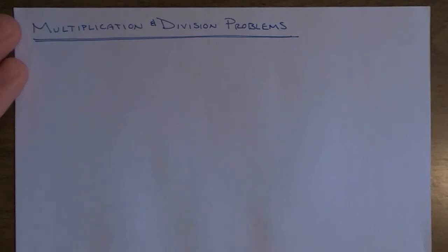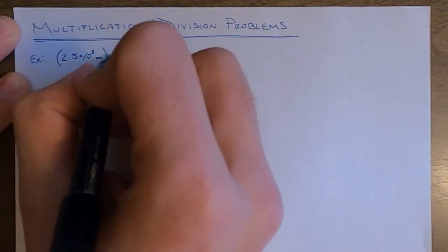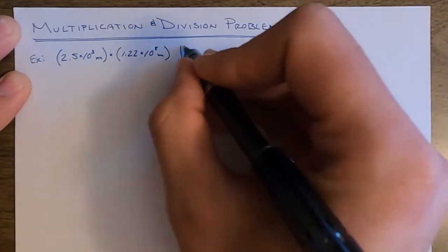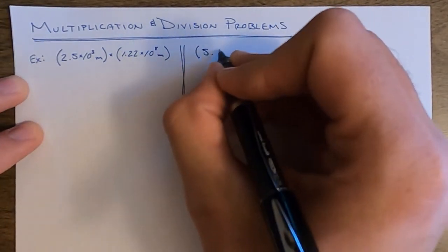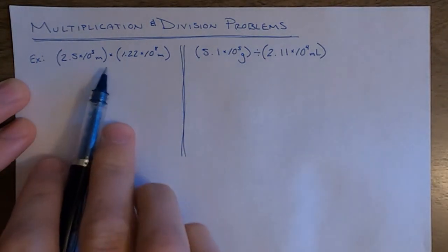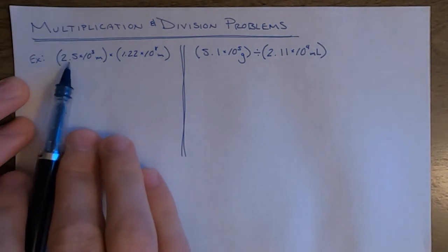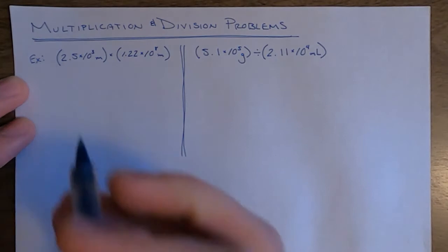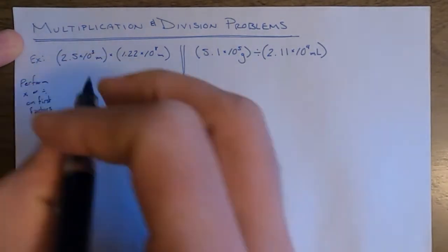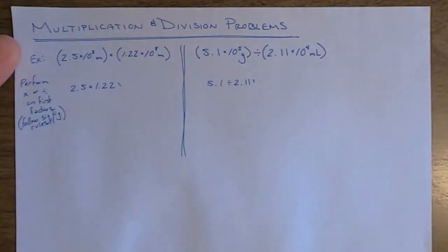Next we're going to look at the different ways you can do calculations with numbers in scientific notation. The easier ones are actually multiplication and division. We'll look at a couple of examples — one multiplication and one division. The first step is to perform the multiplication or division on the first factors. Don't forget to follow significant figure rules.